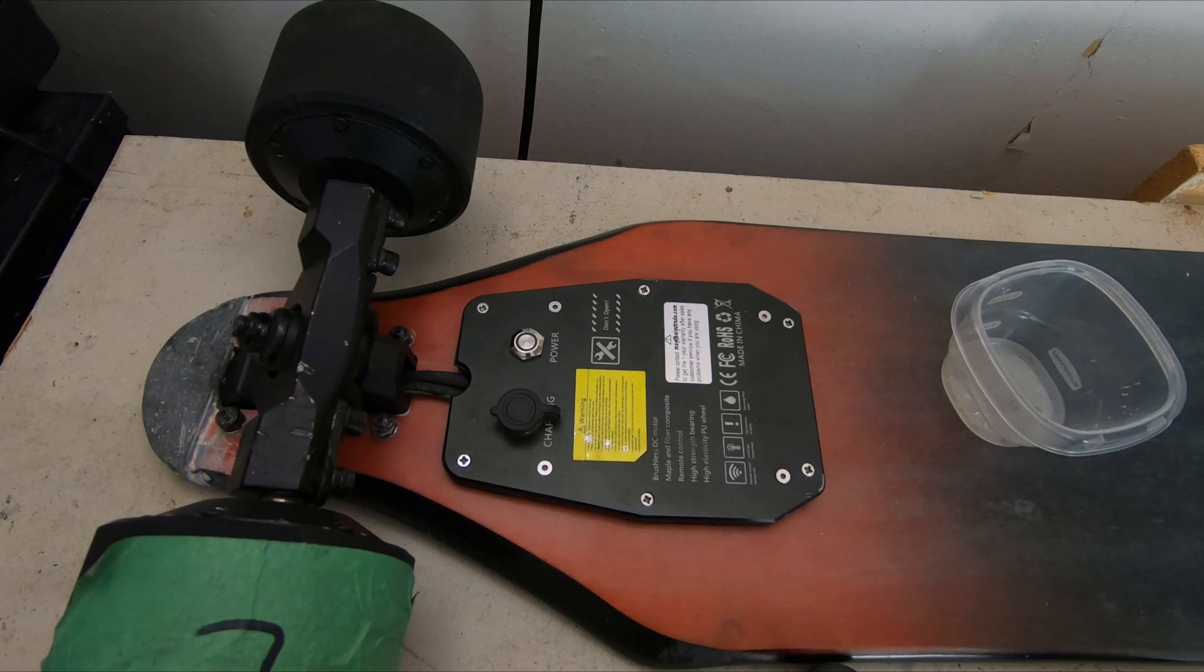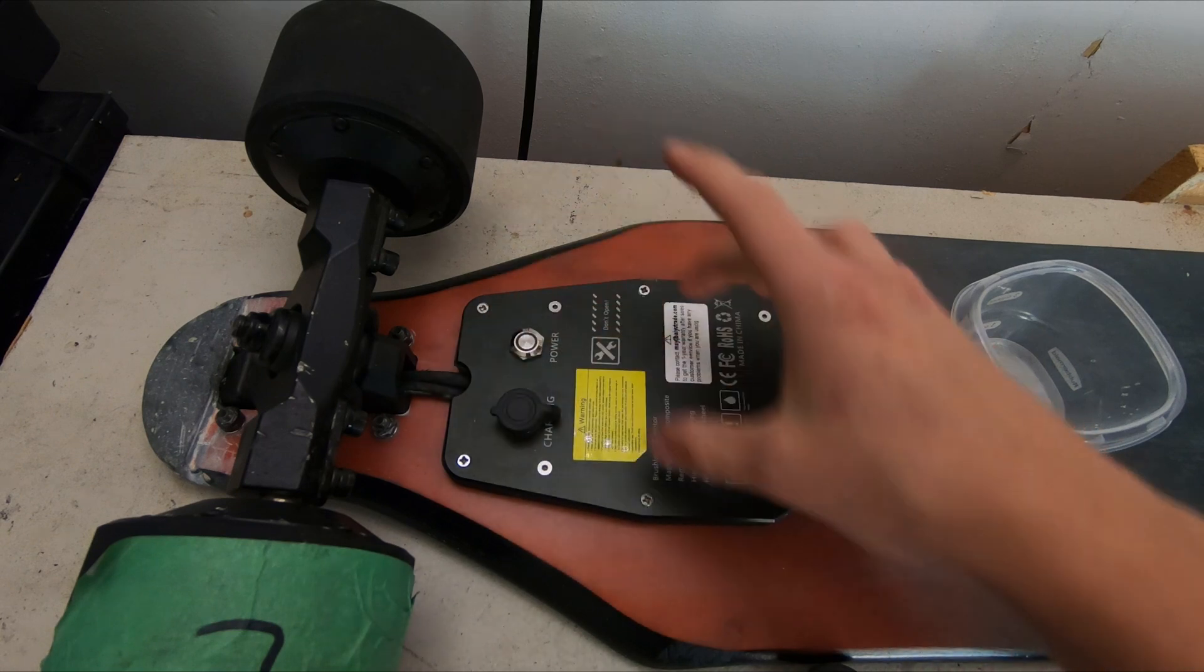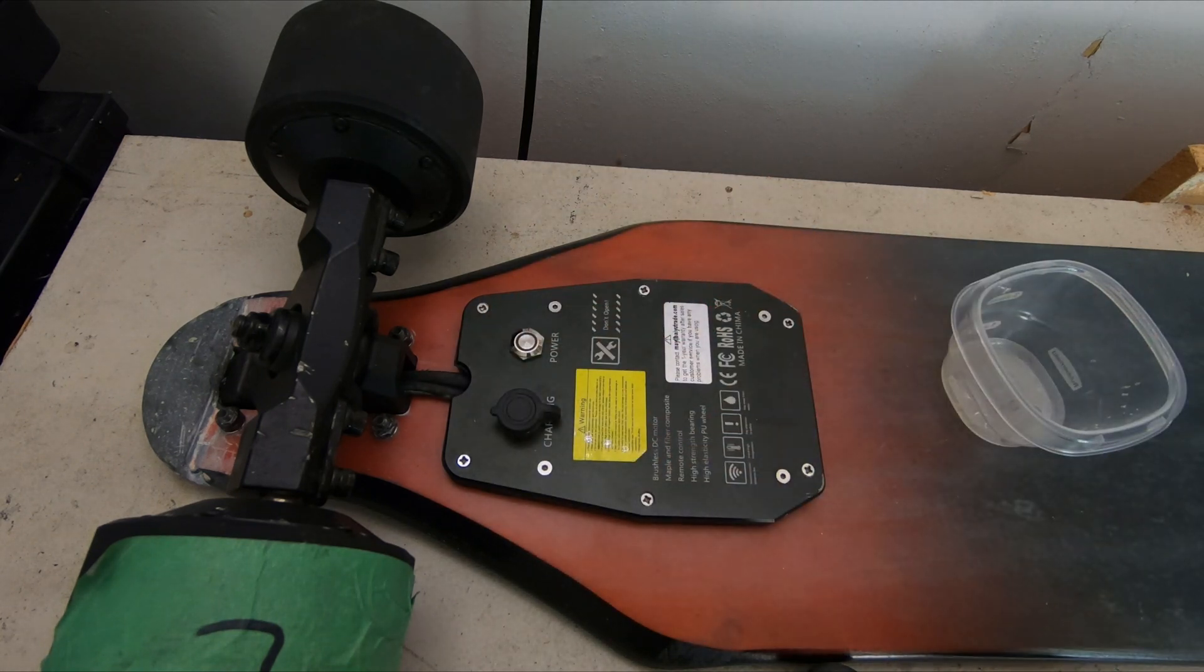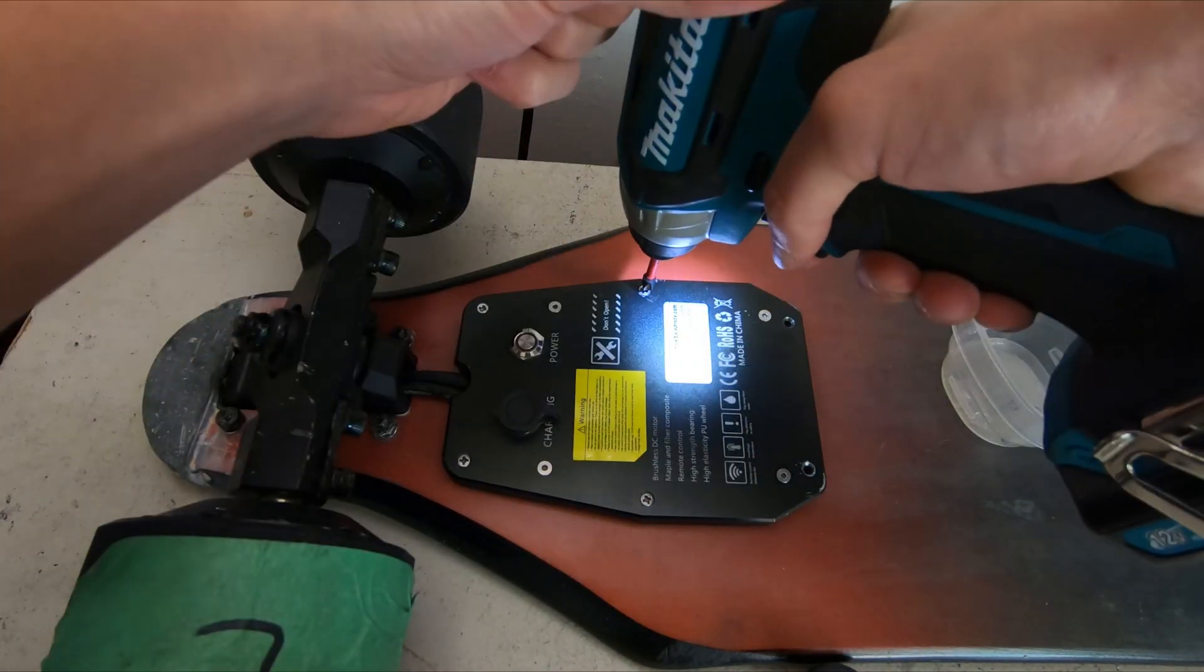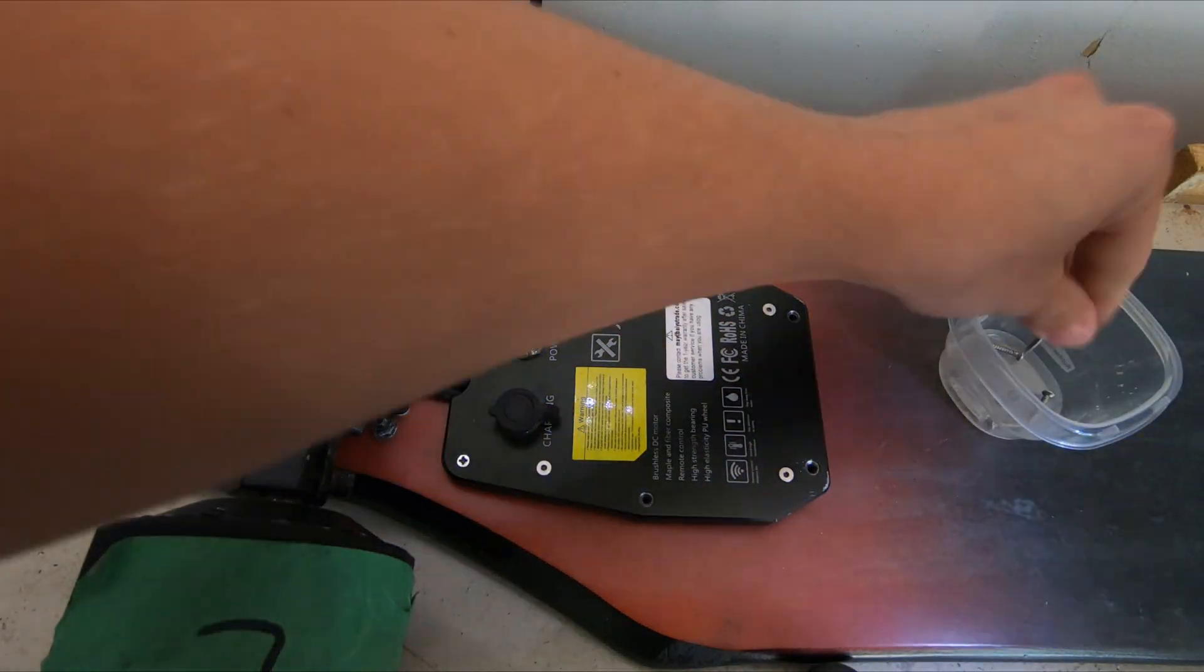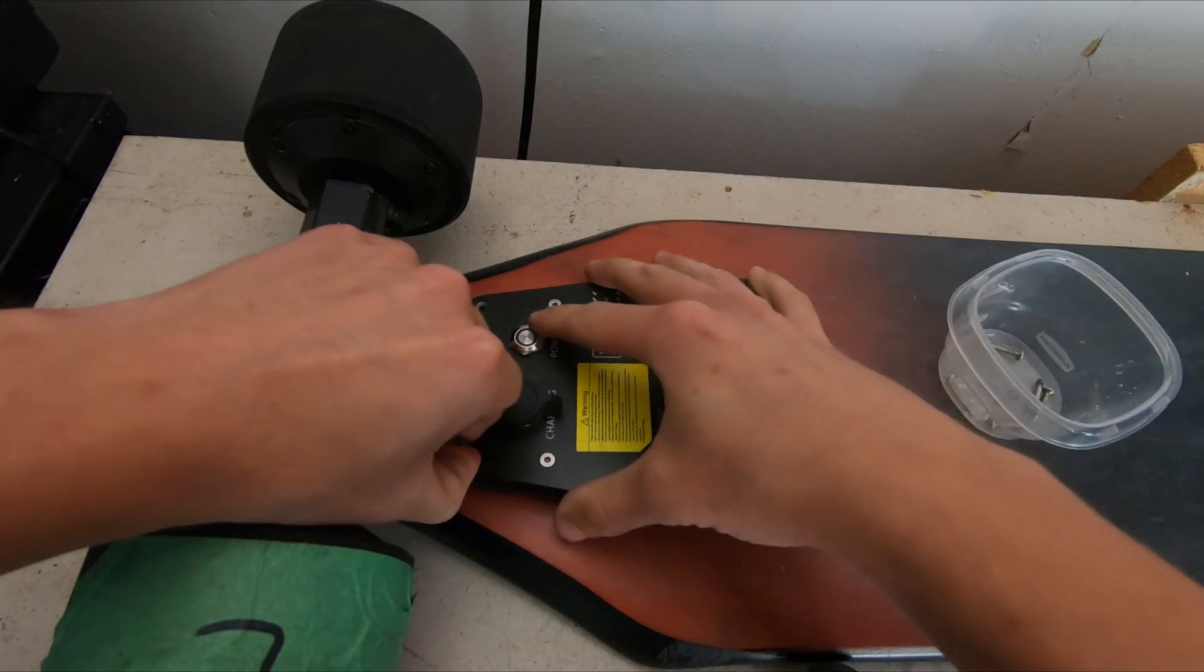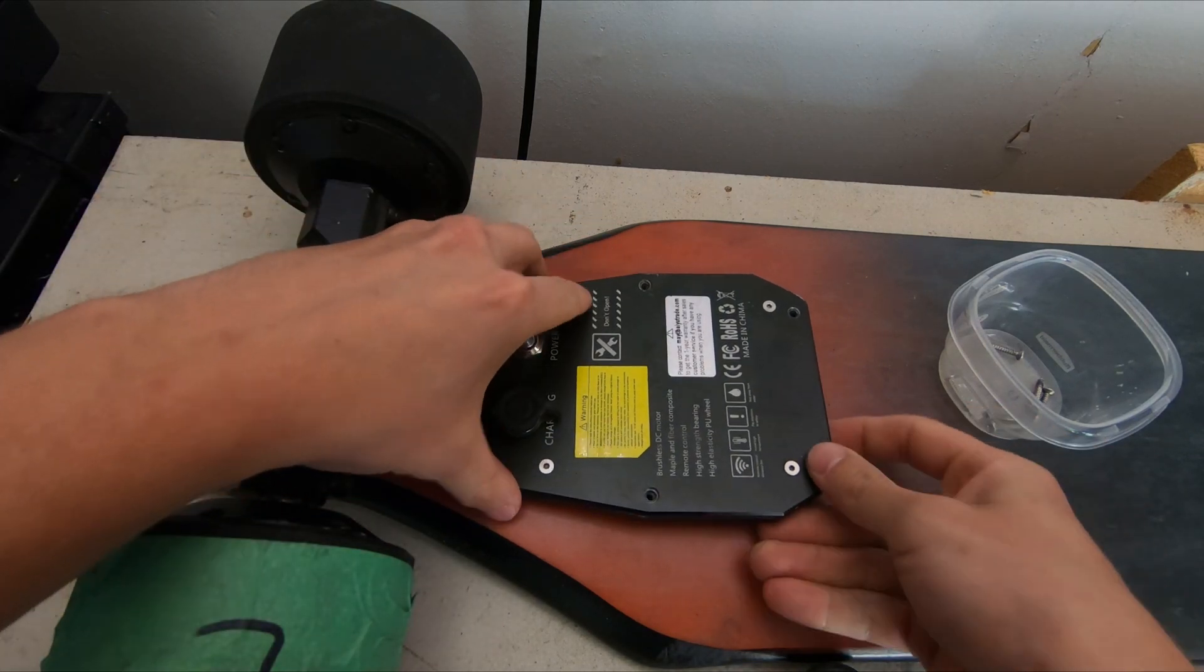So let's go ahead and kick off on how we can make that sound a lot better. The first step in this is to remove the main board and disconnect the wheels from the main board. There are six Phillips head screws and this comes off very easily.